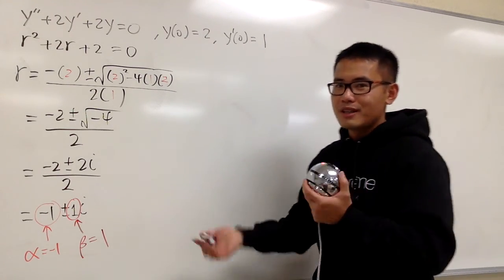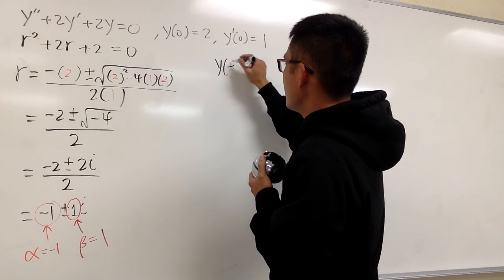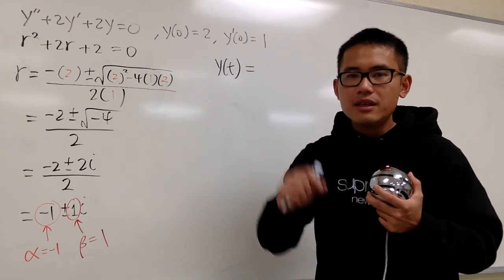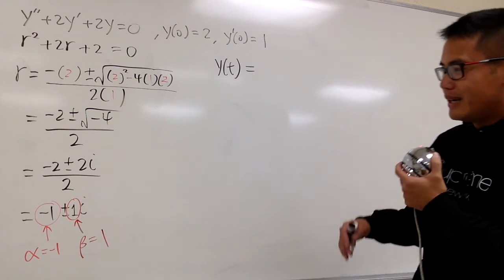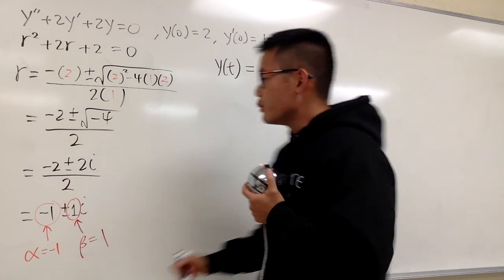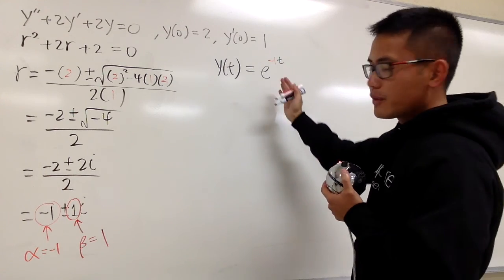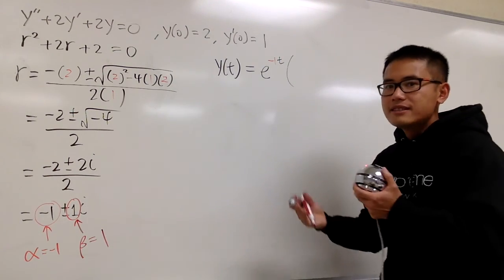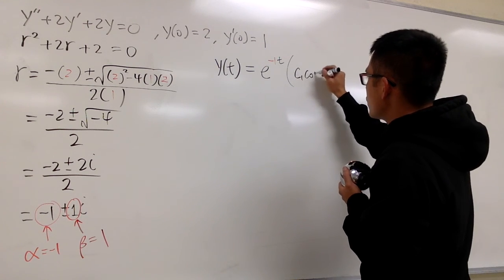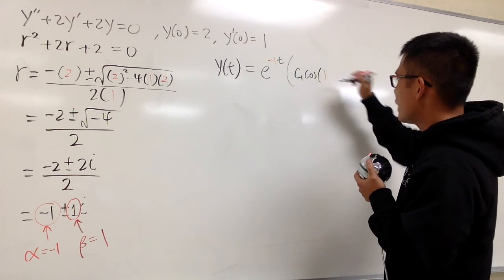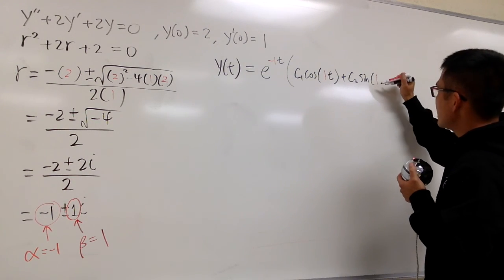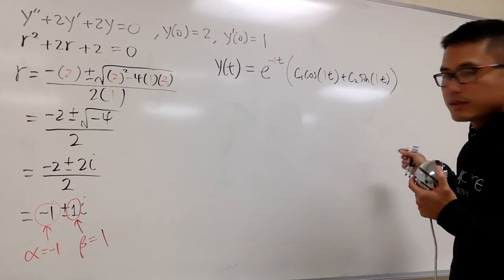As long as you can solve for r, you pretty much are done. From here, you can tell that y of t is going to be, in the complex root situation, e to the alpha t times the parentheses c1 cosine beta t plus c2 sine beta t. So this is e to the negative 1t. Inside, we have c1 cosine of 1t plus c2 sine of 1t. So beta is 1 throughout.